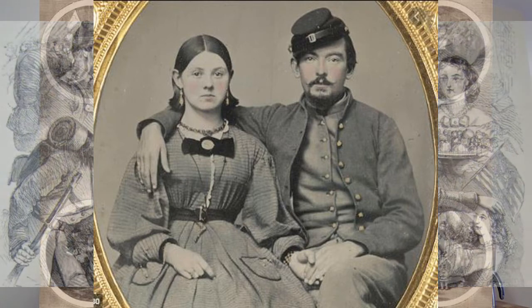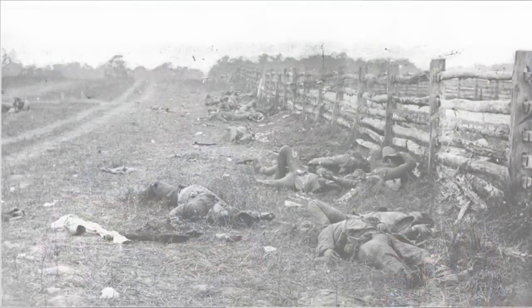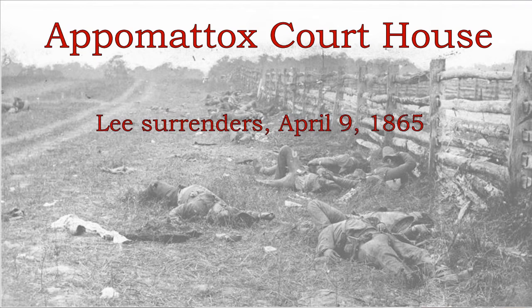Eventually the Union, through superior numbers and their industrial ability to create better and more armament, wore the South down by 1865. Robert E. Lee had to surrender. He did so in Virginia at Appomattox Courthouse — about 70 to 100 miles from Rockingham County, an interesting place to visit. He surrendered April 9th, 1865, almost four years to the day of the battle at Fort Sumter.